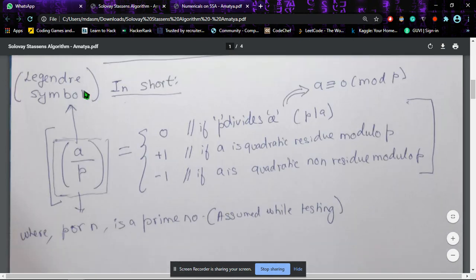...a Legendre number, or the Legendre symbol. So what is this Legendre symbol? The Legendre symbol is basically a representation of a upon p, such that the value of a/p is in this range: either it is 0, or plus 1, or minus 1. It comes out to be 0 when the condition p divides a is satisfied...